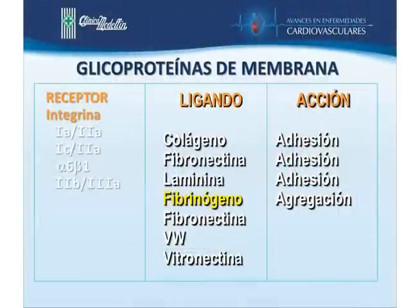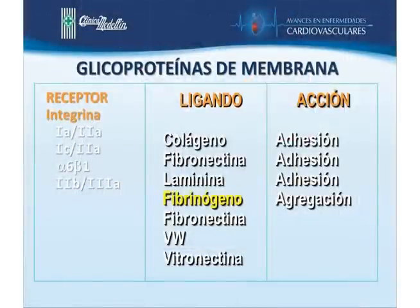Específicamente en el síndrome coronario agudo, la plaqueta tiene glicoproteínas de membrana que le permiten su interrelación con el medio y su acción en la formación del trombo blanco. Aquí ven ustedes algunos de los receptores del grupo de la integrina y los ligandos correspondientes. El ligando más importante es el fibrinógeno, pero también están el colágeno, la laminina, la fibronectina, el factor de von Willebrand y la vitronectina. La mayoría están involucrados en adhesión, y el fibrinógeno con la vitronectina en la agregación plaquetaria.